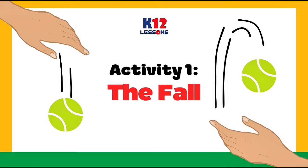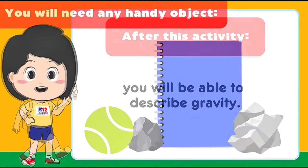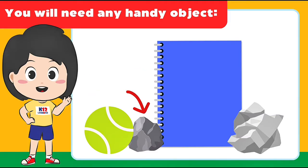Activity 1: The Fall. After this simple activity, you will be able to describe gravity. You will need any handy object — a ball, a notebook, a small stone, or a crumpled paper.